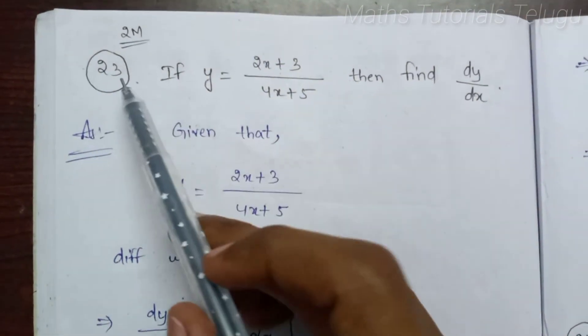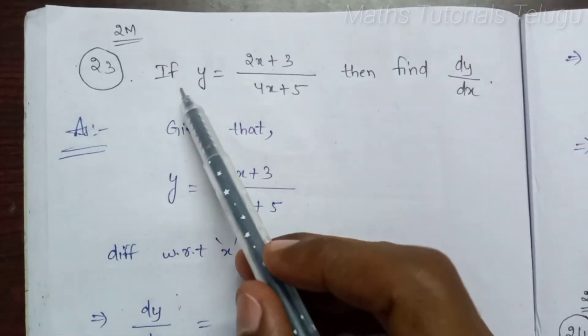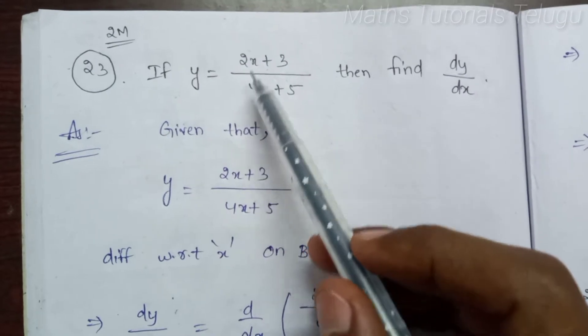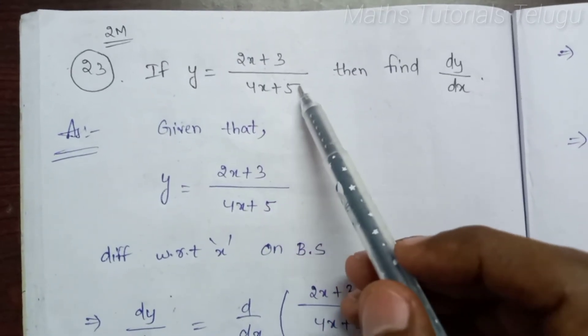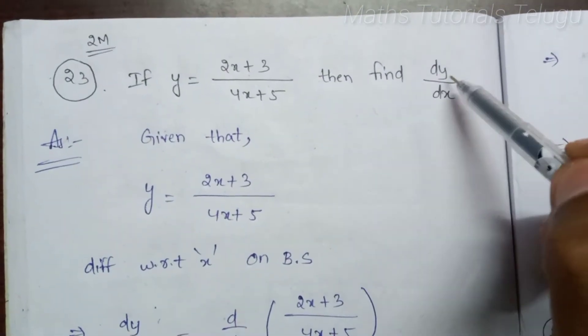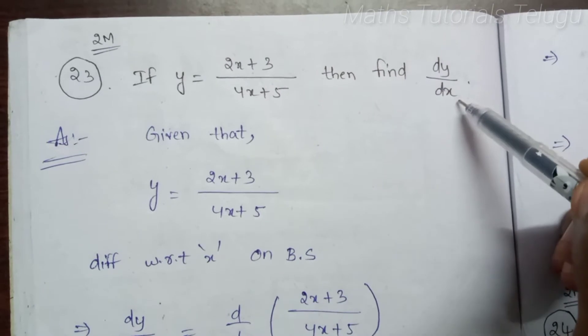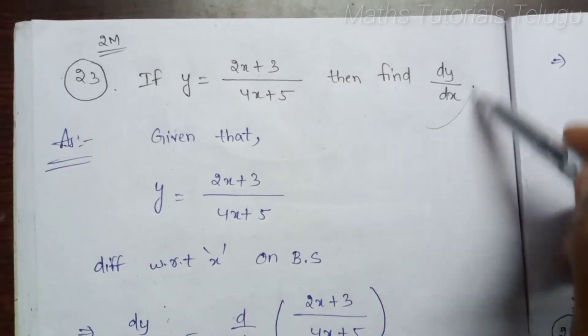Hello guys, next one's question 23, 2 marks. If y is equal to 2x plus 3 divided by 4x plus 5, then find dy by dx.